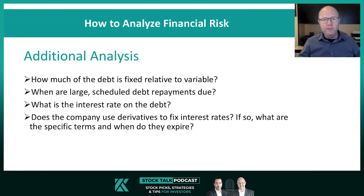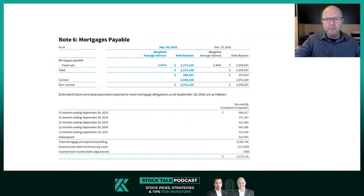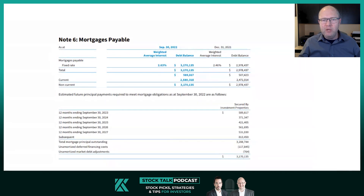Where do you get this information? Typically you will get this type of information in the footnotes of the company's financial statements. Every company is going to disclose information in the footnotes a little bit differently — some disclose a lot, some disclose a little. This is an example from a real-life company where the company discloses the amount of debt, the average rate, and when debt is coming due. In this case the company has about $3.2 billion in total debt outstanding at an average interest rate of 2.63%. In the table below you can actually see how much debt is going to have to be refinanced in each year. In 2023, the company is going to need to refinance about $590 million in debt.